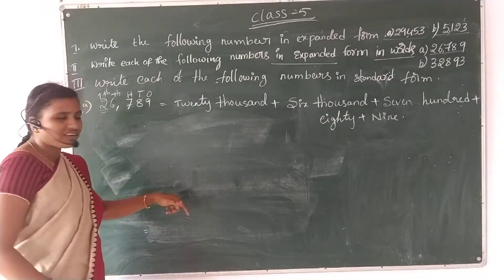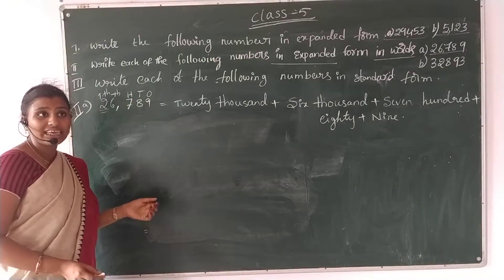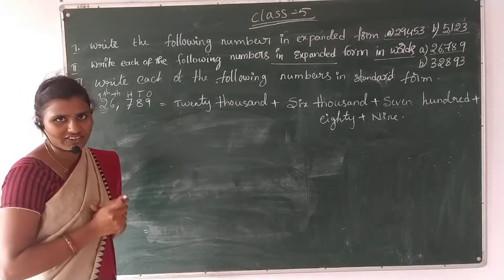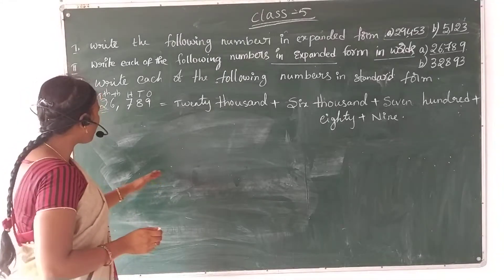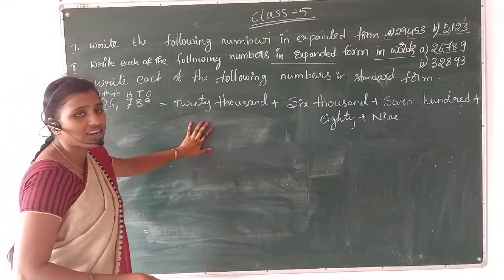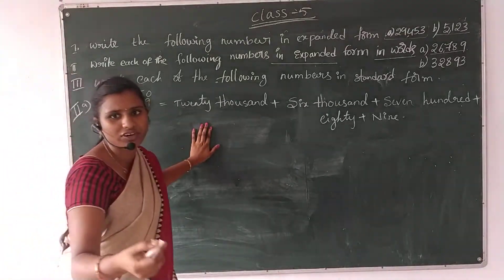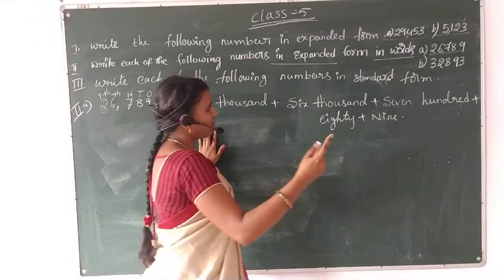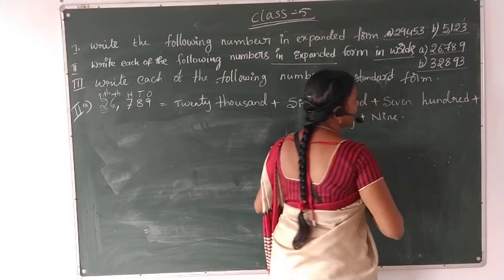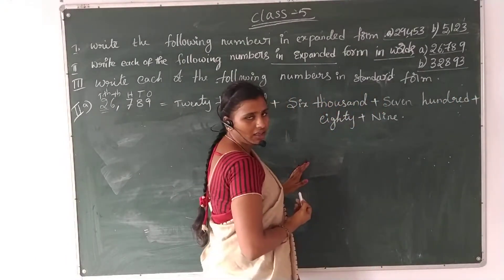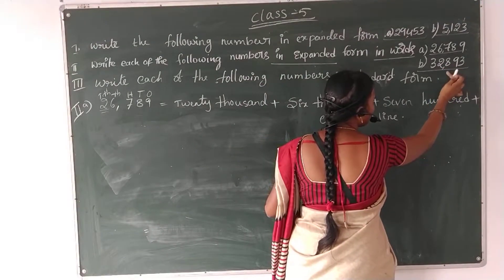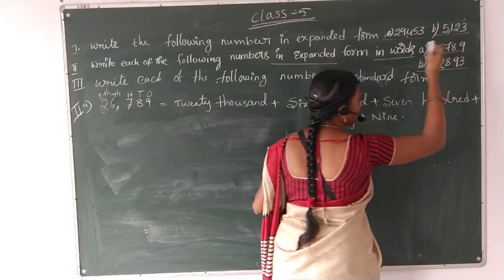Last round — let's see in numerals. We wrote it here in words. Let's take one more example. B: the number is 32,893.